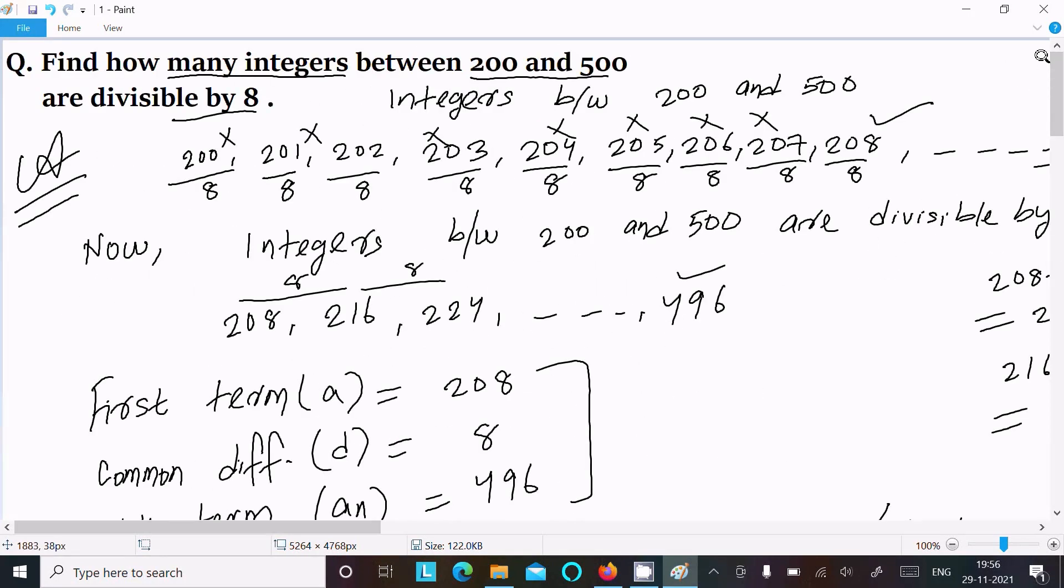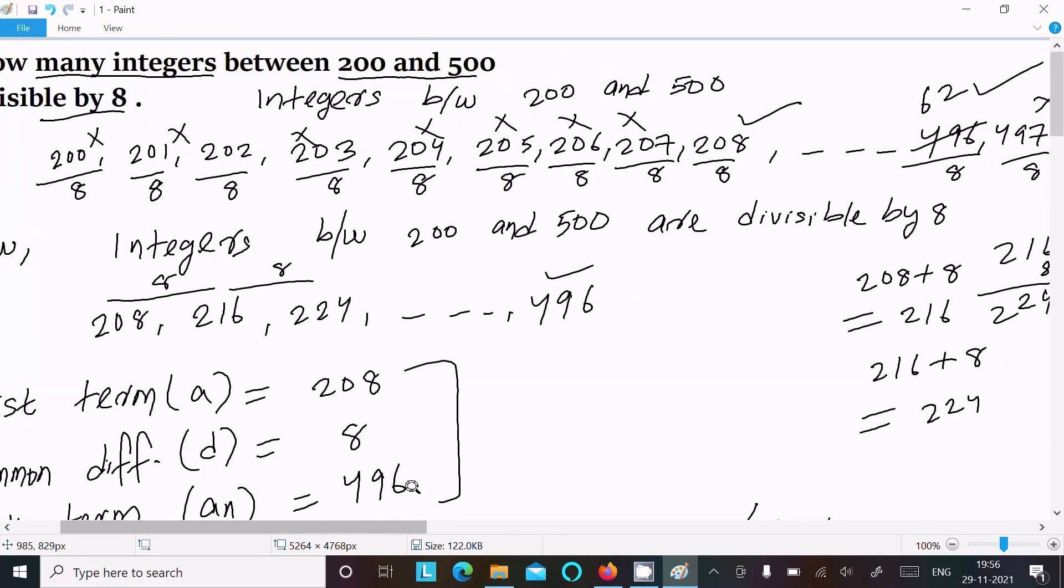Okay, so this is the way we can find the terms. So first here, write the integers and try to divide. So here, this to 207, this is not divisible by 8. So here, this is divisible from 208.